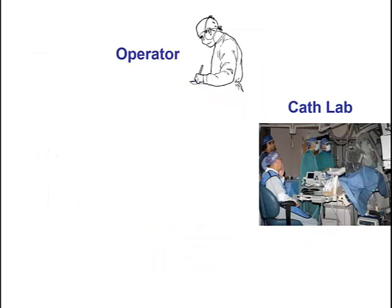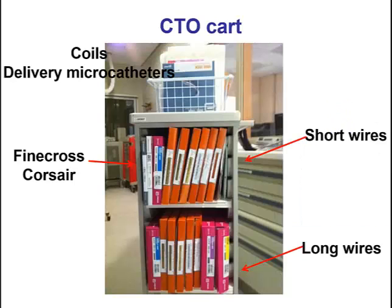Moving on to the CTO lab, another critical component of success, since everything we do happens as part of a team. We start by developing a CTO card — an area where all the CTO equipment is gathered: wires, microcatheters, equipment for managing complications. Having everything in one location can really help expedite the procedure and avoid delays.